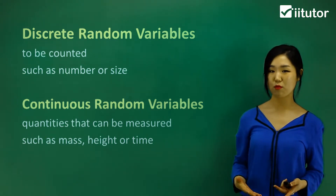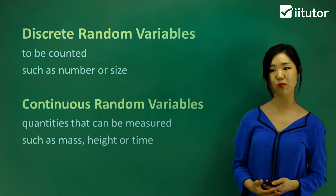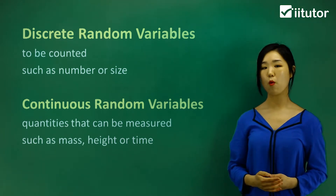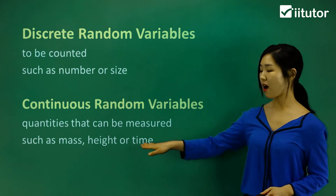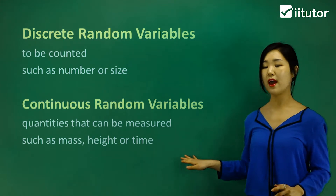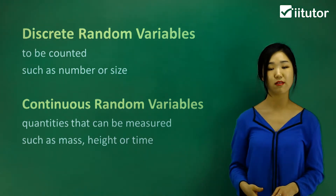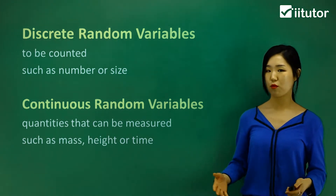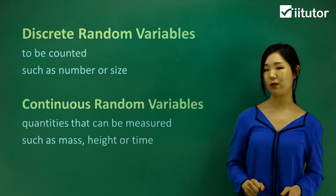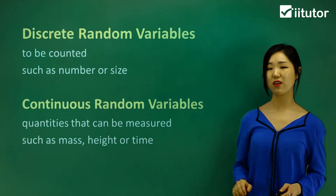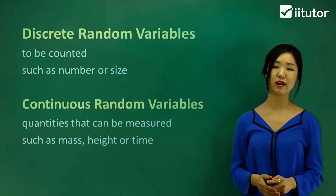For example, mass can be measured in kilograms, grams, or liters for capacities. Height is the height of a person, and time is the duration of something — how long an event takes. These are all continuous because these numbers can occur anywhere on the number line.